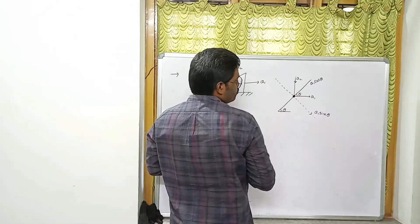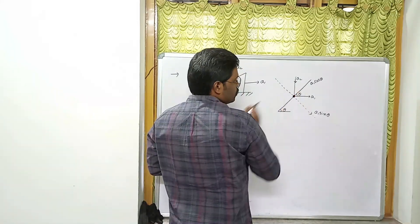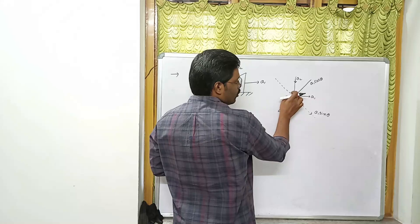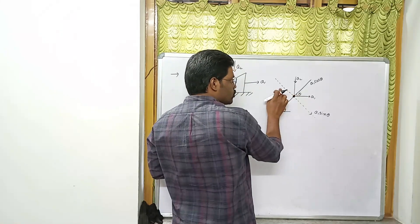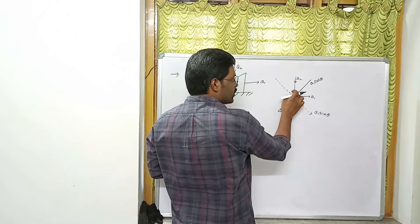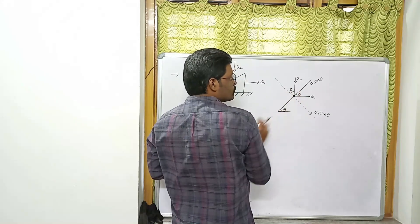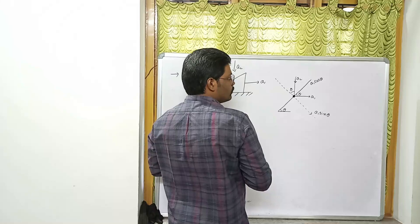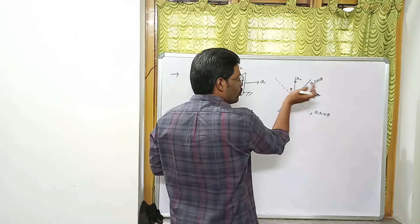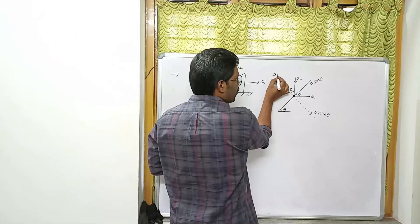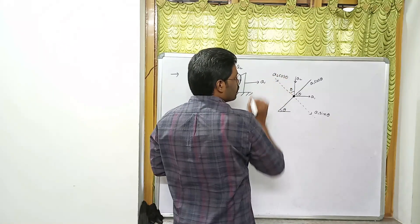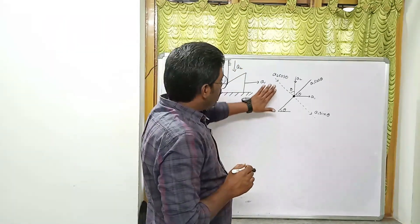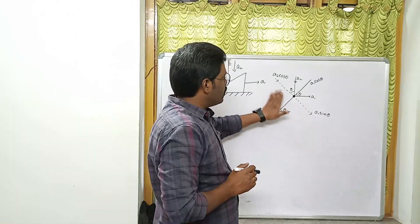Now observe that a2 and a1 are perpendicular to each other. If the angle here is theta, then this angle becomes 90 minus theta, which means the other angle is theta. According to resolution of vectors, a2 splits into a2 cosθ along the normal line. So a2 cosθ and a1 sinθ are present on the same normal line.